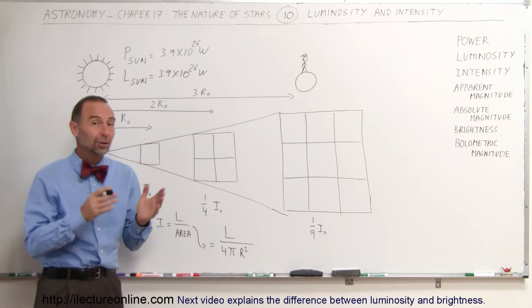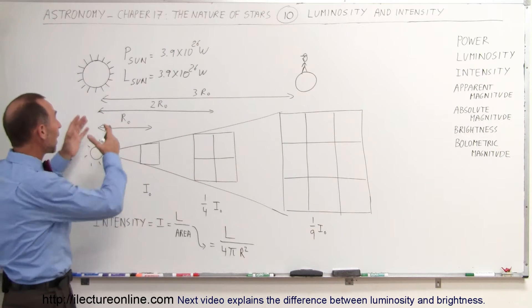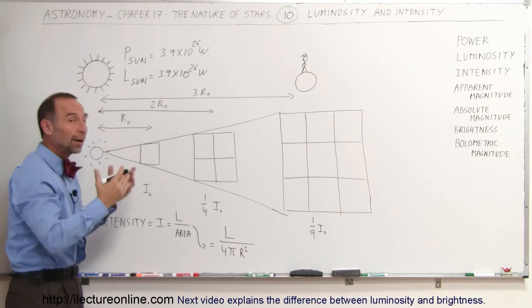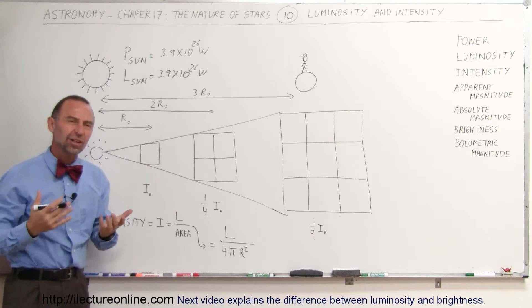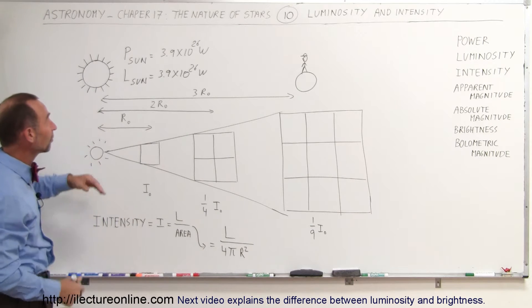We use power in physics and luminosity in astronomy to describe how much energy a star or any object puts out. How much energy per unit time, I should say. And that's usually in terms of watts.